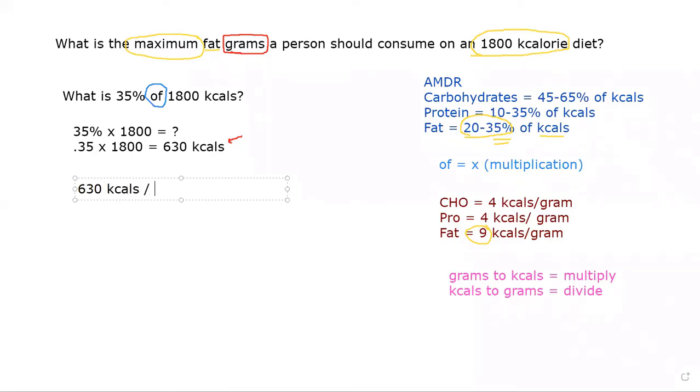So in this case we are going to take the 630 calories and divide by 9. And it is ok to get out your calculator for this one. The answer is 70. So we can rewrite this question as the maximum number of fat grams on an 1800 calorie diet is 70 grams.